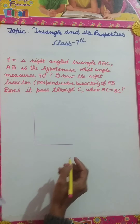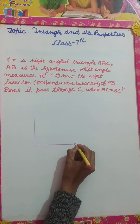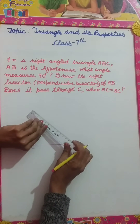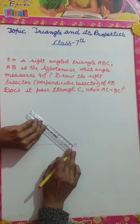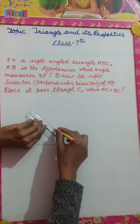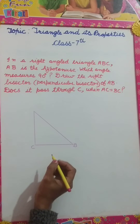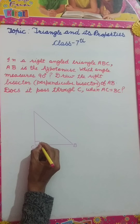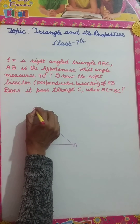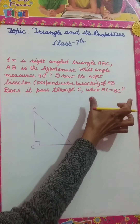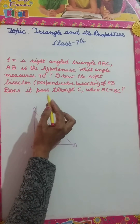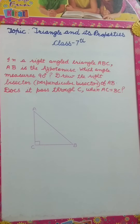AB is the hypotenuse. Writing the triangle: B, C. AB is the hypotenuse, and BC should be equal to AC. Now I have to draw a perpendicular bisector of AB.